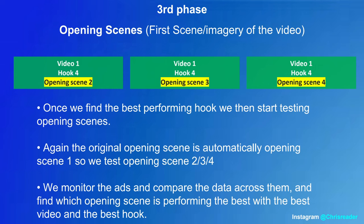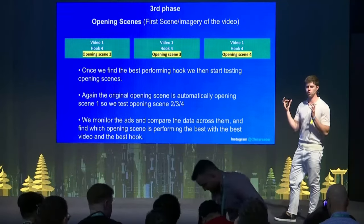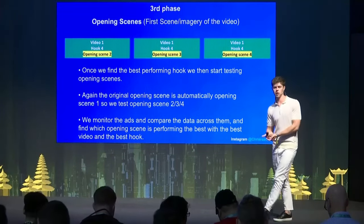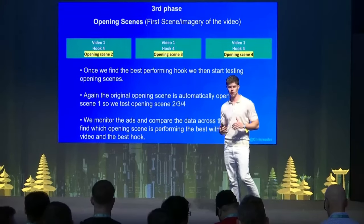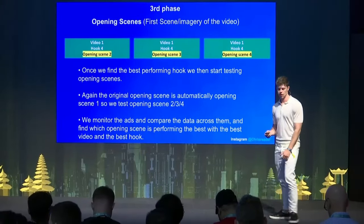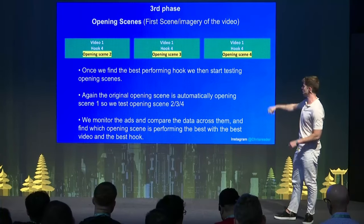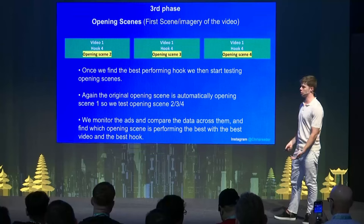The third phase is the opening scene — this is the imagery of the video. Testing this is actually massive, because I've had videos where I have the exact same video and hook and it's negative or breaking even, then I throw it into phase three and I'm immediately getting 100–150% ROI. It just shows that if you don't visually capture the attention of the audience, they're not going to watch the whole video. You could have a winner script, but if you're not capturing attention at the beginning, no one's going to watch it. Since the original video is opening scene one, we start testing opening scenes two, three, and four, then monitor the data to see which performs best.